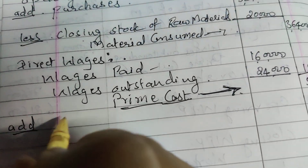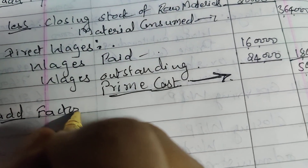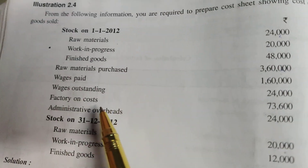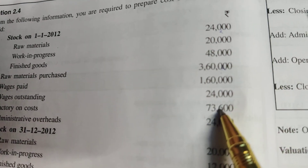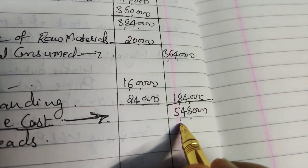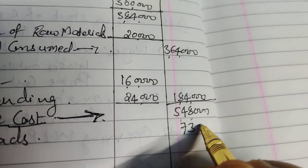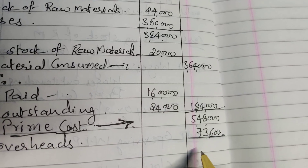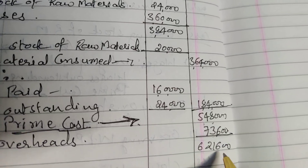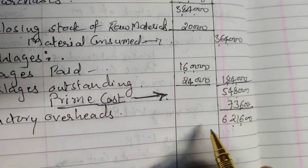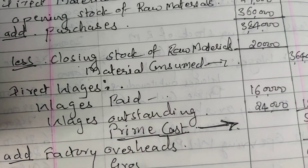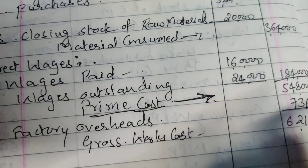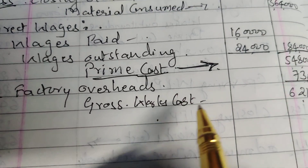To prime cost, we add factory-related expenses — factory on cost or factory overheads. The amount given for factory on cost is 73,600, so we write 73,600 directly. The total of this is 6,21,600. This is called gross works cost — it is 'gross' because we still need to adjust work in progress.